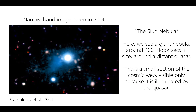This was a pretty significant discovery — this nebula is about 400 kiloparsecs in size, while the Milky Way is about 30 kiloparsecs, so it's on the scale of tens of galaxies, or roughly the scale of dark matter halos surrounding galaxies — what we call the circumgalactic medium. The cosmic web has two constituent parts: the intergalactic medium, the gas between galaxies floating in space, and the circumgalactic medium, which is close enough to galaxies to be enriched by outflows of heavy elements like carbon and oxygen.